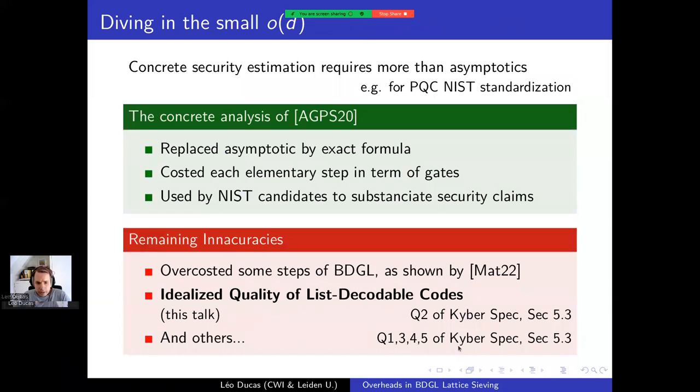The context of this talk is a dive into those small O's. In particular, if we want concrete security estimation more than asymptotics, for example for standardization, then we need to look at the exact cost, not just the asymptotic cost. This has, of course, already been done by work of 2020, and it replaced asymptotic formulas by exact formulas. It costed carefully each elementary step in terms of number of gates, and this was then used by various candidates to give more precise estimates.